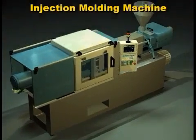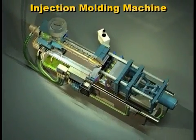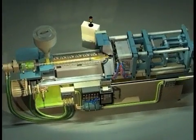To understand how an injection molding machine works, we'll use a cutaway drawing. This is the view from the back side of the molding machine.